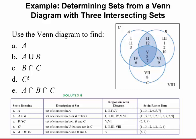C complement is everything not in C — so it excludes regions 4, 5, 6, and 7. That leaves regions 1, 2, 3, and 8, giving us {11, 3, 12, 1, 2, 10} (region 8 has nothing). For A intersect B intersect C — where all three overlap — that's only region 5, which contains {5, 7}.